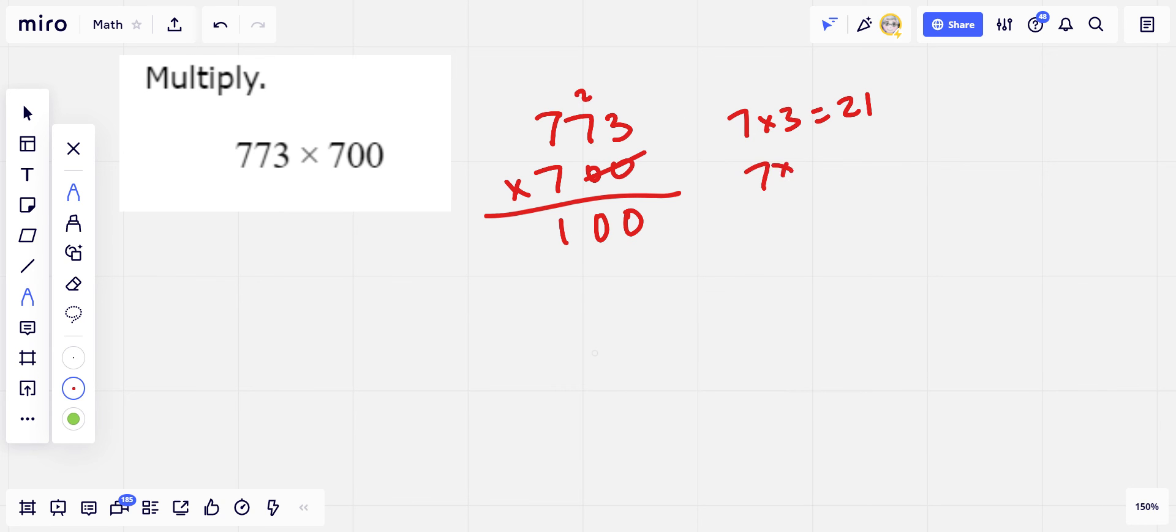And then we have 7 times 7. That's 49. And then we've got to add that 2 to it which makes it 51. So we'll write down the 1 and carry the 5.